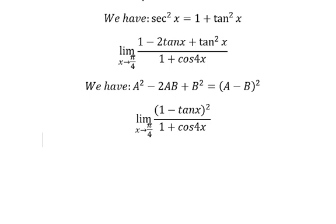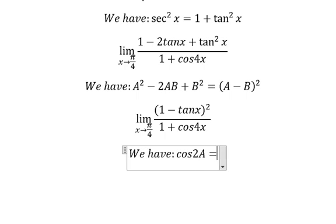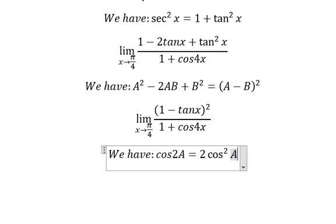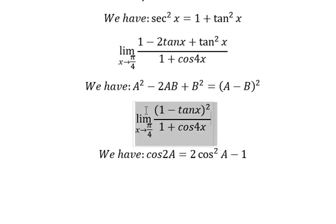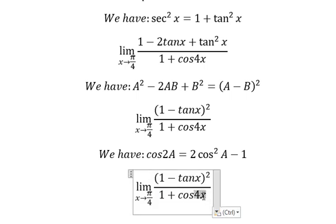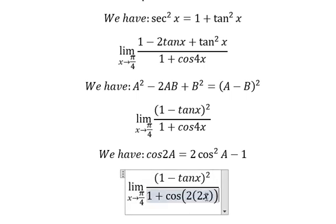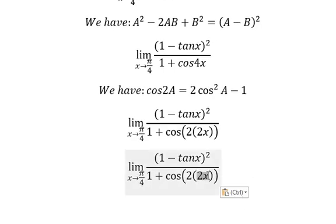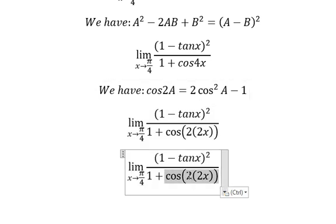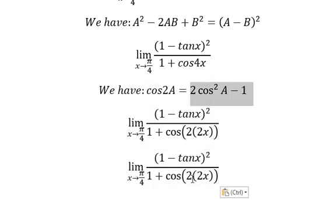Next we have the next one. For x, that is about number two multiplied by two x, and two x is about capital eight. Now we need to transform this one into this one.